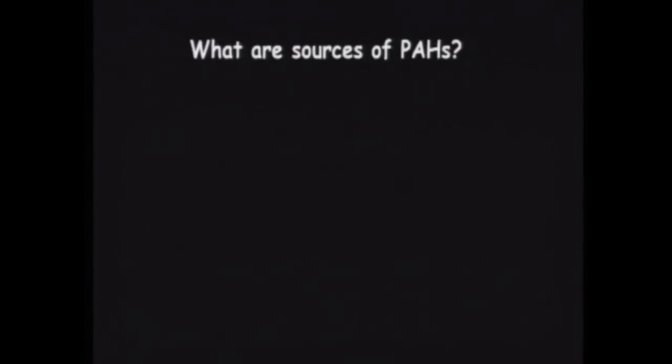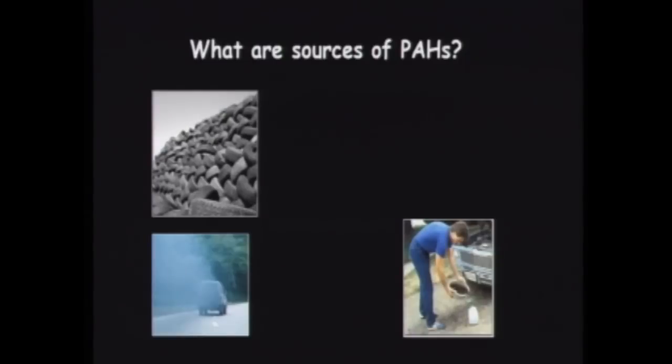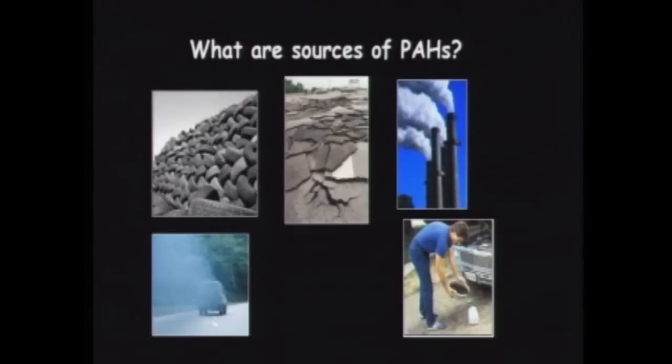We were scratching our heads trying to figure out the possible source of these high concentrations. There are a lot of PAH sources in urban environments, because whenever we burn anything that has carbon, we create PAHs. Any product that involves carbon burning in the industrial process will also contain PAHs — there are PAHs in tires, in auto exhaust, and in used motor oil. Your motor oil is pretty low in PAHs when you buy it, but when you cook it up in your car, you create high concentrations of PAHs.